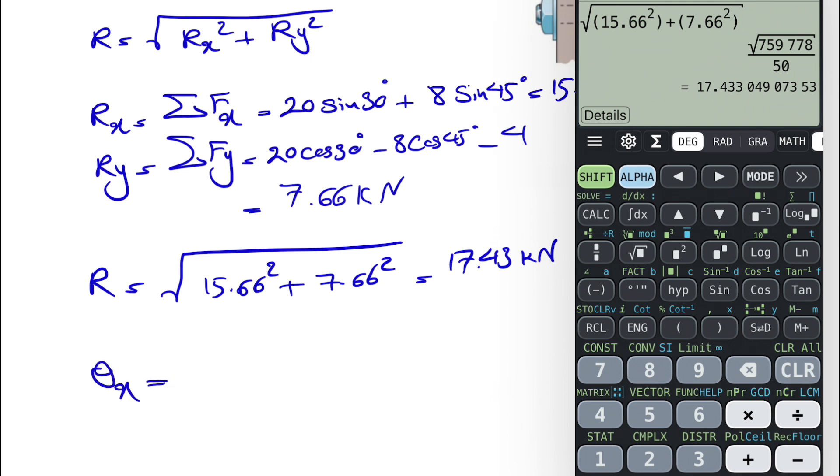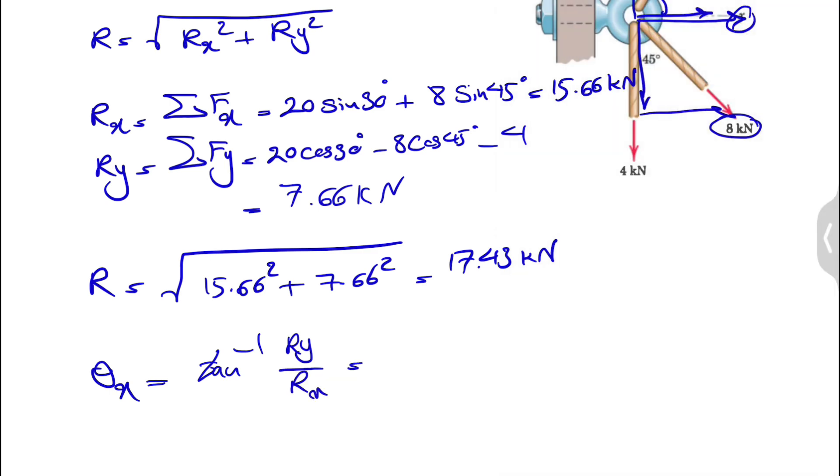For finding theta x, or the angle that it makes with the x-axis, we have to find the tangent inverse of Ry over Rx. The reason is that at the end of this we have one single R. Consider this one Ry and this one Rx, this will be our R. If you want to find this angle, which is basically our theta x, or the angle that it makes with the positive side of x-axis, if we look at this right triangle we need the opposite over the adjacent, which is Ry over Rx.